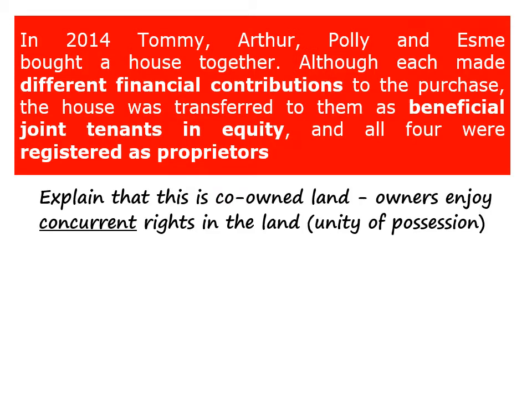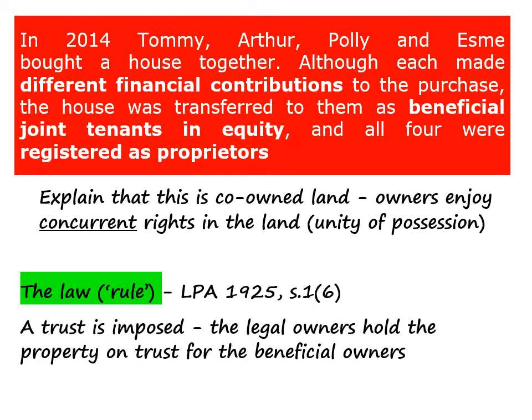The first thing I would do is explain that the land is co-owned because the four owners all had rights in the property which they enjoyed concurrently. I would also explain the relevant law which confirms that a trust is imposed on co-owned land — the legal owners, who are the trustees, hold the land on trust for the benefit of the beneficial owners in equity. It's very easy to overlook this first point, as the temptation is to jump straight in and look at how subsequent events affected the ownership. But this part is easy, so marks are there for the taking.